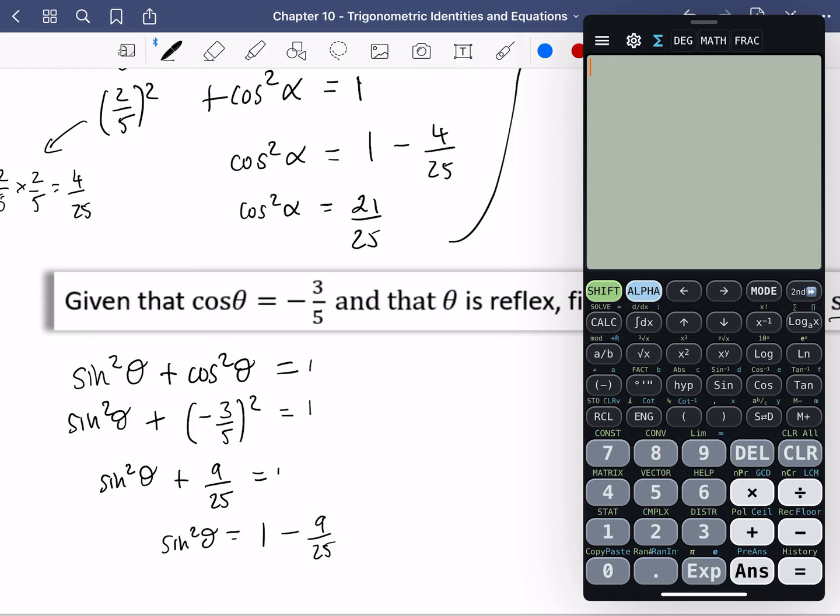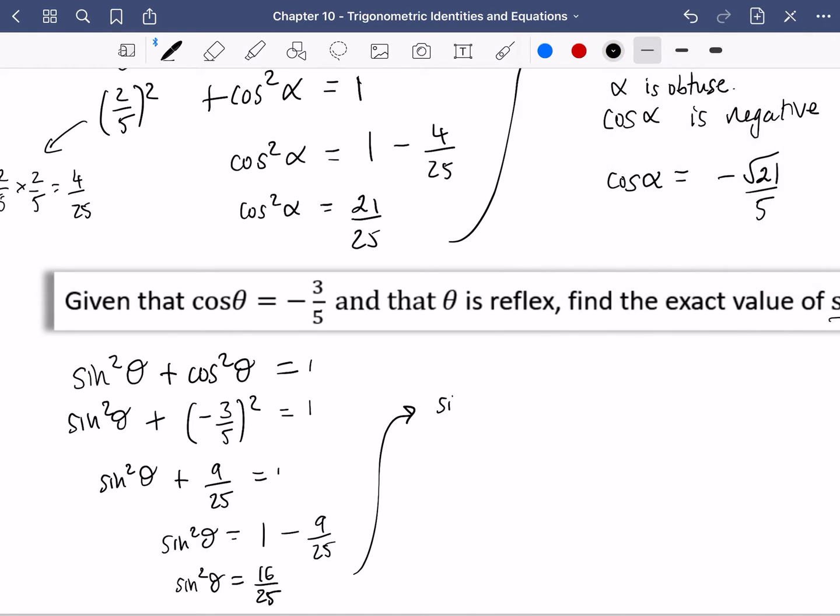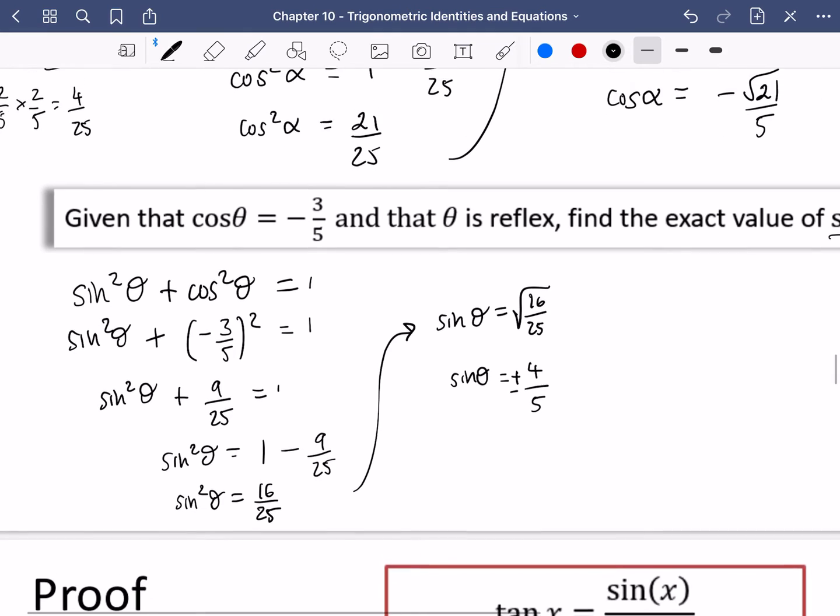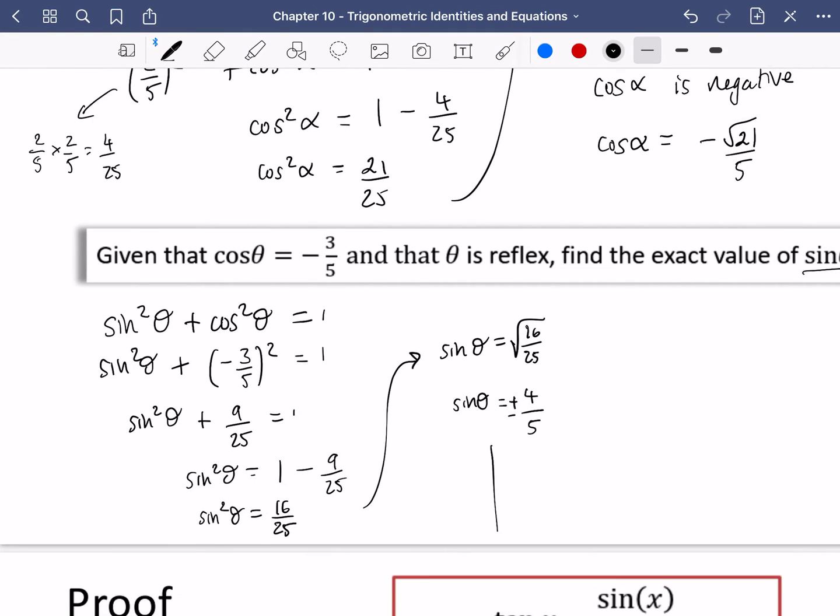Let's be really lazy. I would do this in my head. One minus nine over 25, it's obviously going to be 16 over 25. Coming up here, that must mean sine theta is the square root of 16 over 25. Square root of 16 is four, square root of 25 is five. And it could be positive or it could be negative.